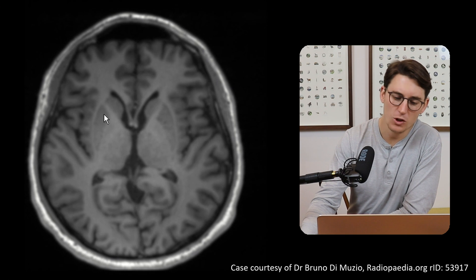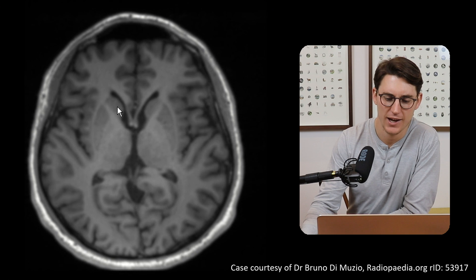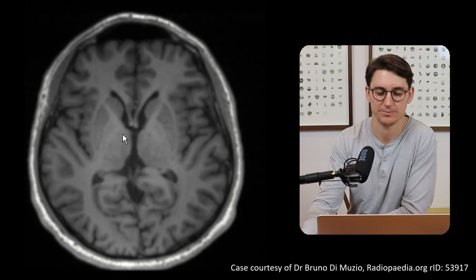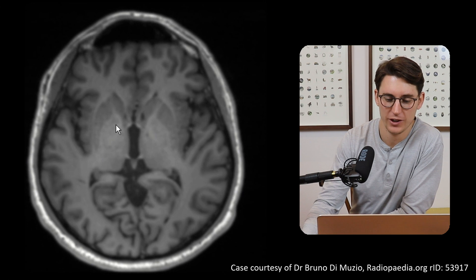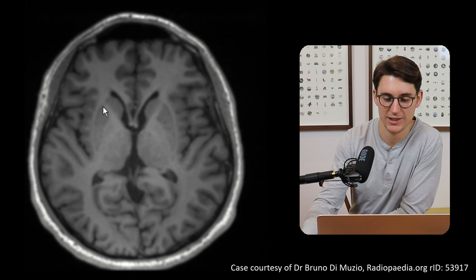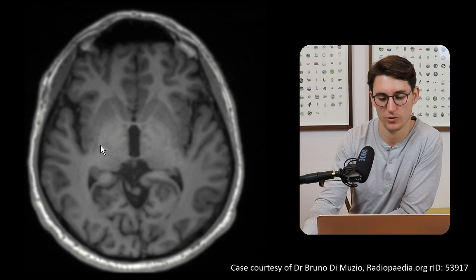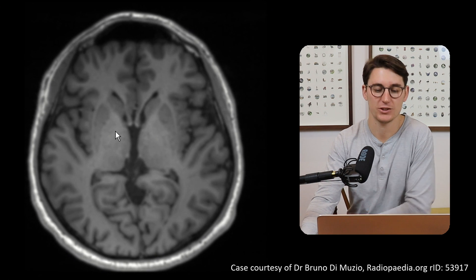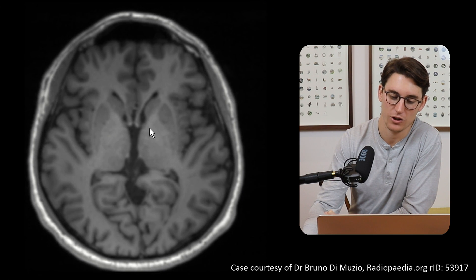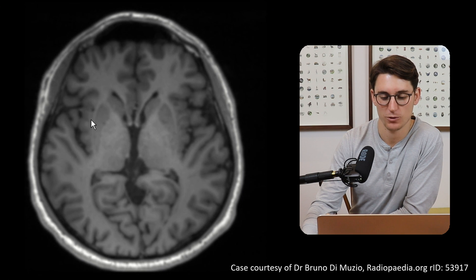Going back to our starting image, we can see the putamen here, separated from the caudate nucleus by the anterior limb of the internal capsule. Together, the caudate and the putamen form the neostriatum, also known as the corpus striatum or dorsal striatum, and they act as a functional unit. The putamen is bordered by the external capsule and the globus pallidus, and it's just this wedge-shaped grey matter nucleus. Medially to the putamen is our globus pallidus, and together these are known as the lentiform nucleus, describing their lens shape with a convex surface on either side.